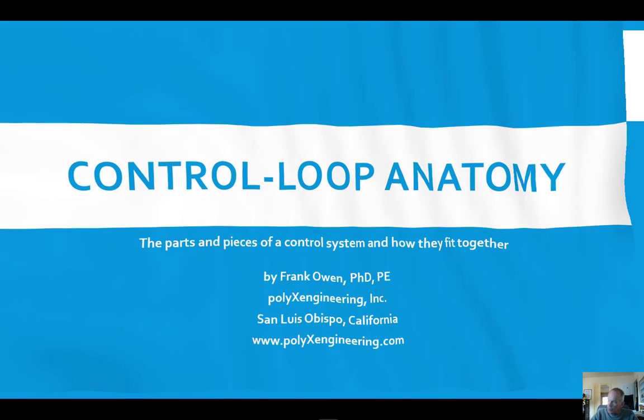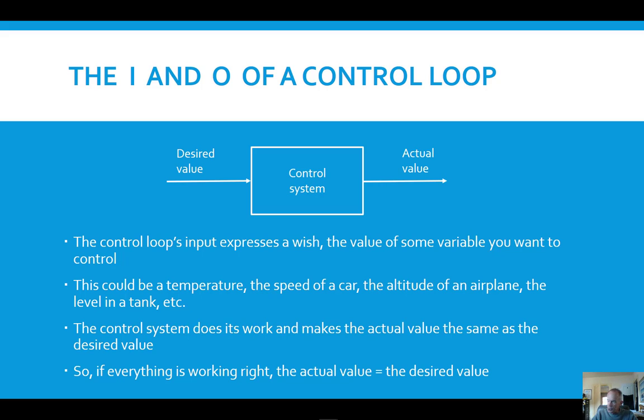To start off with, I want to talk about a control system from a very high level, an overview. What defines a control system is that you have a wish, a desired value, that you feed into the control system and then the control system is controlling that value on an actual device. So you have a wish expressed as the input and then you have the output which is the actual value.